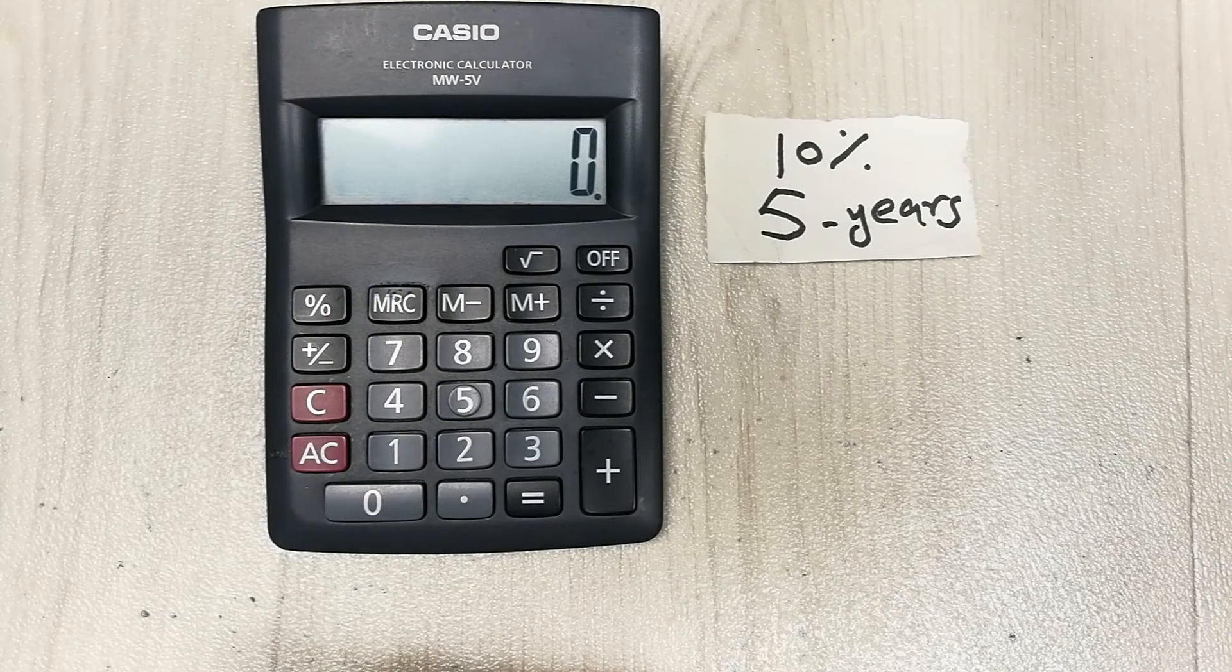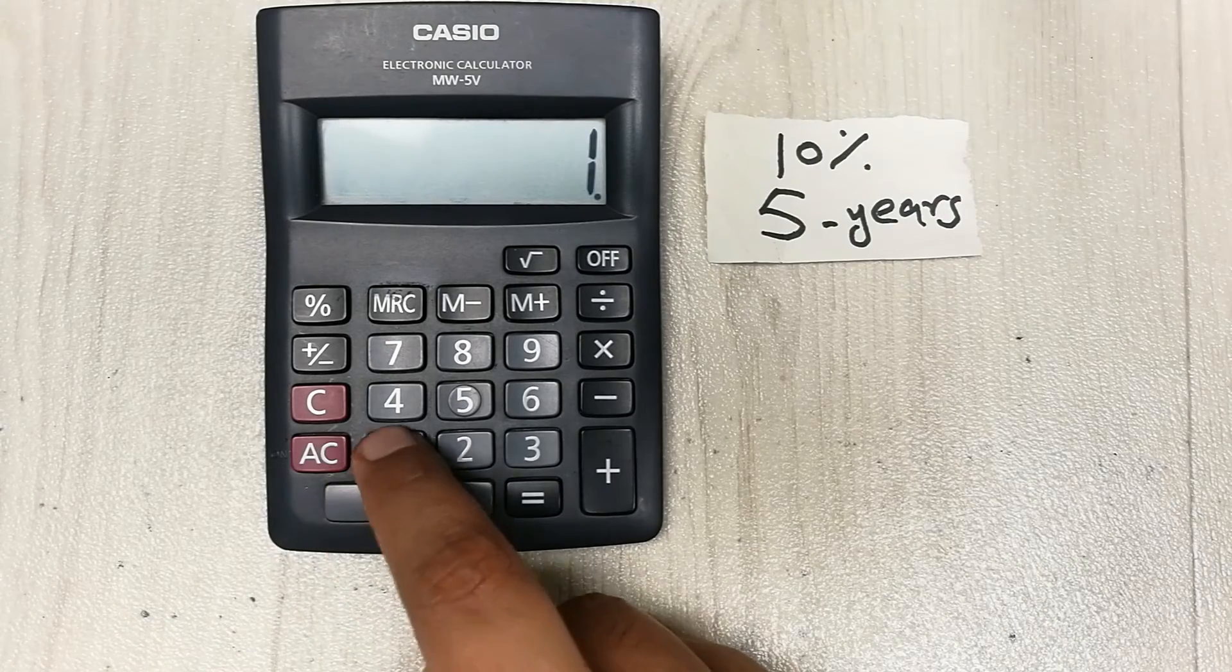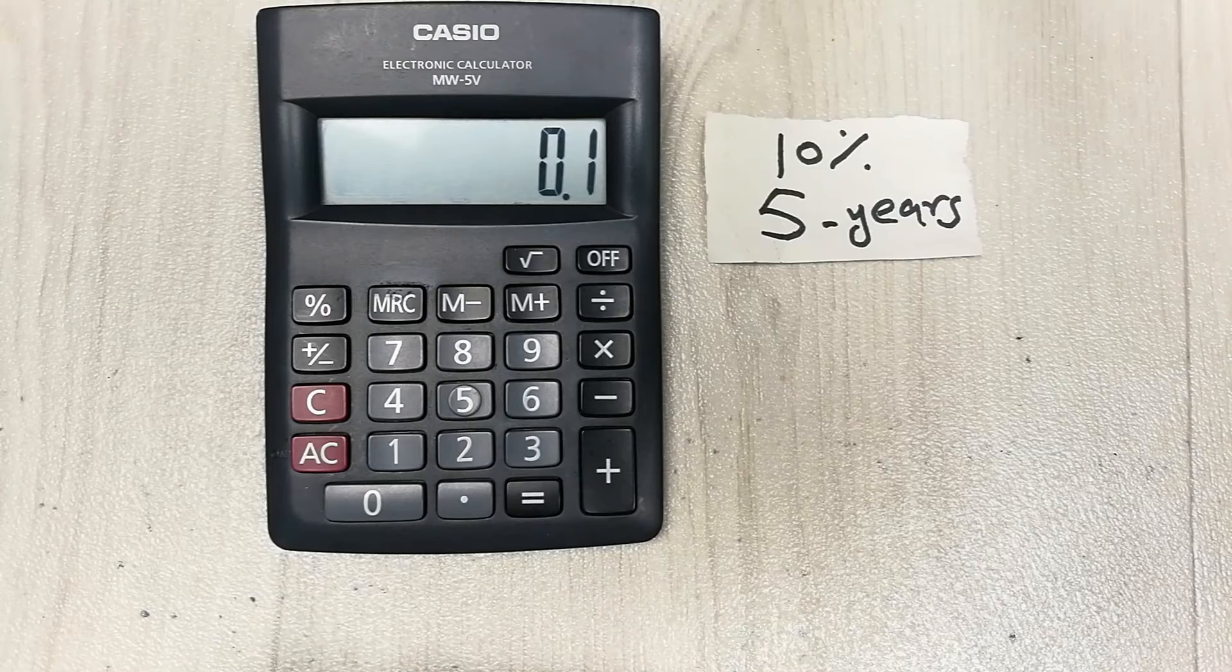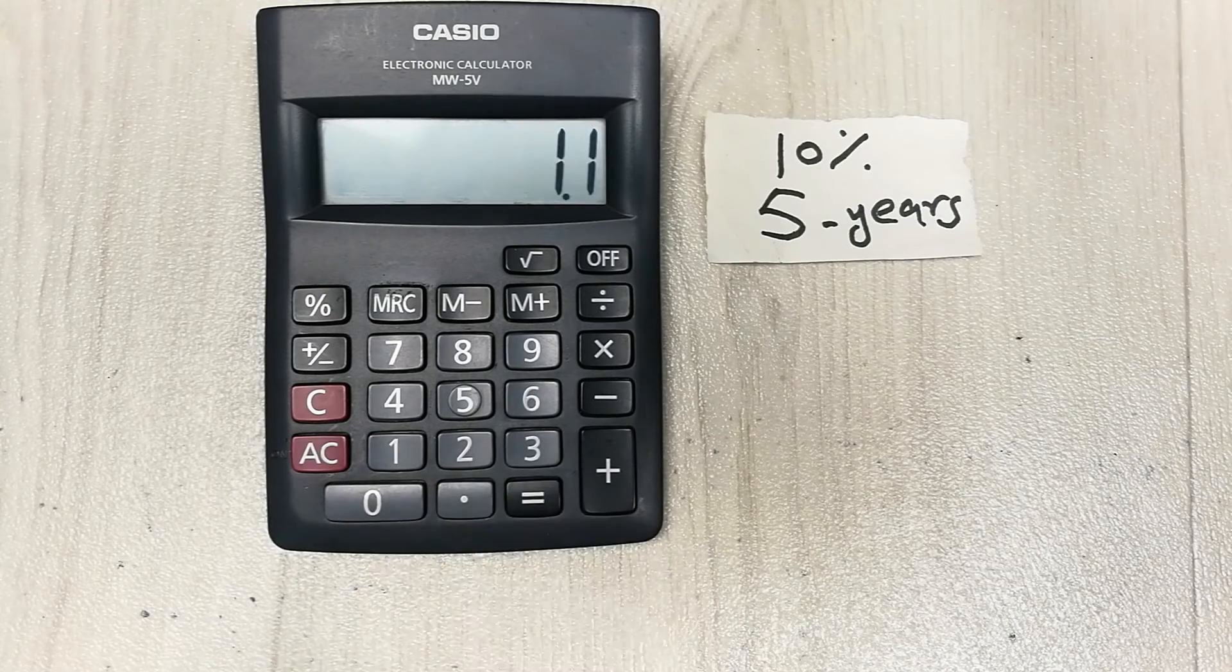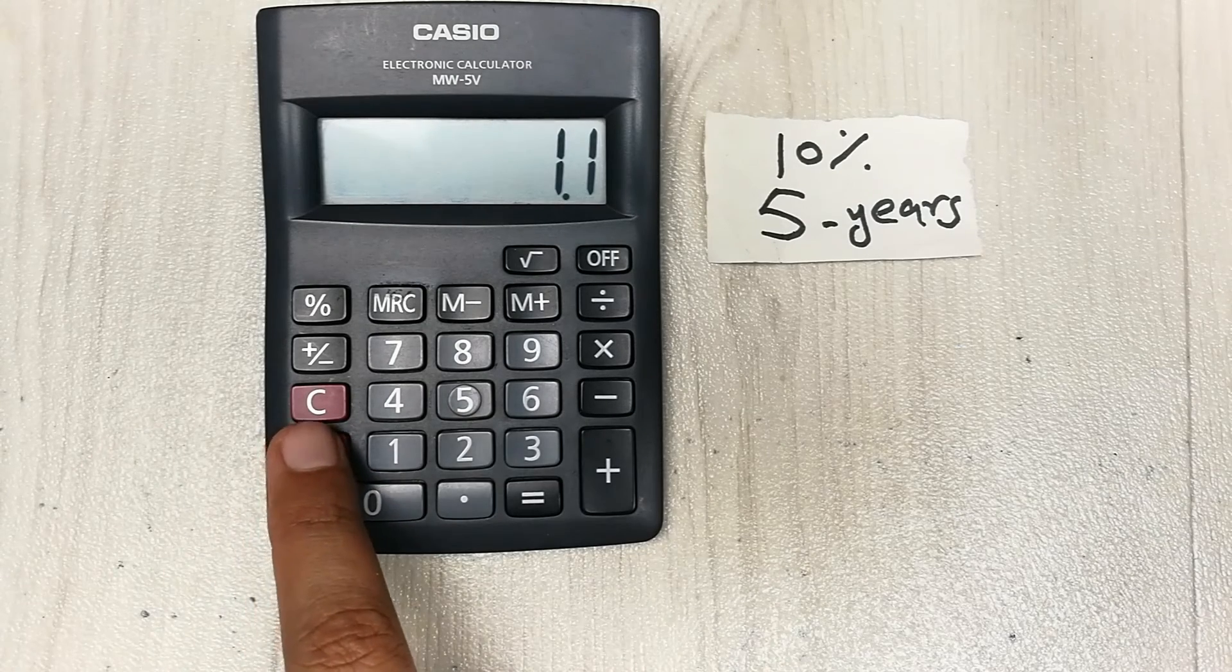Same step: divide this 10 with 100, press equal button. Then add 1, so plus 1. This is the second step. Now remove this 1.1, just save it, and then 1 divided with 1.1. This is the third step.